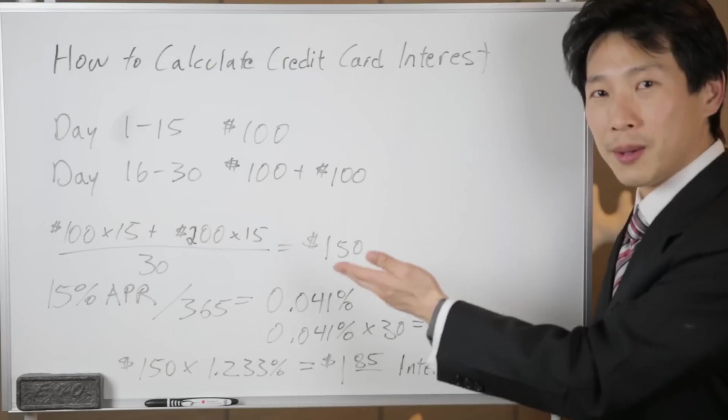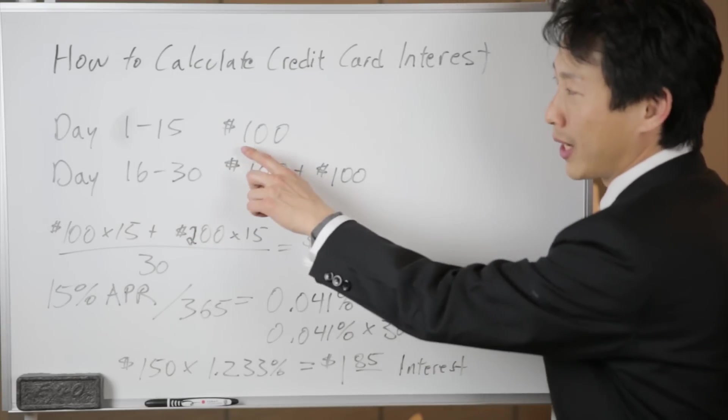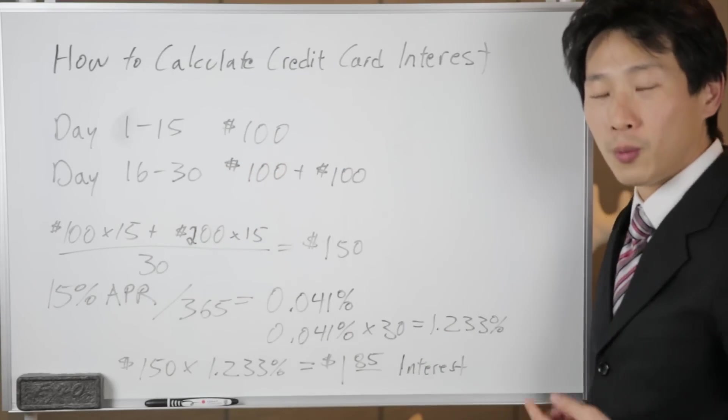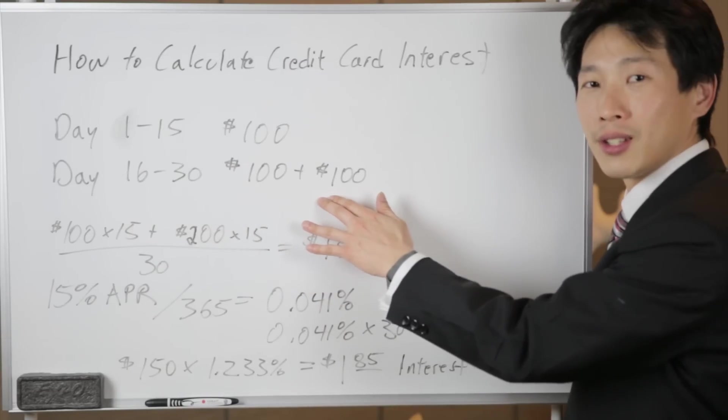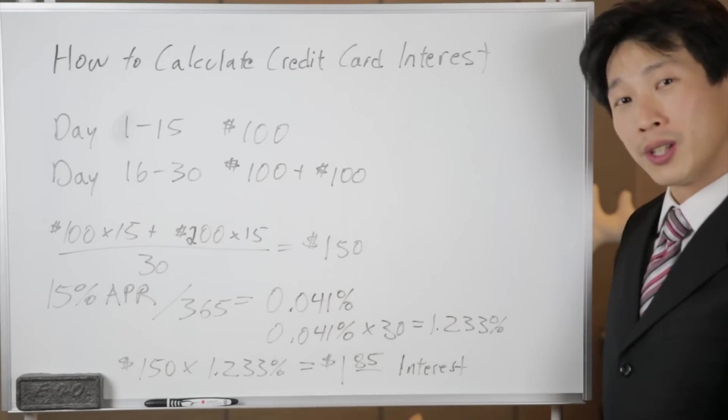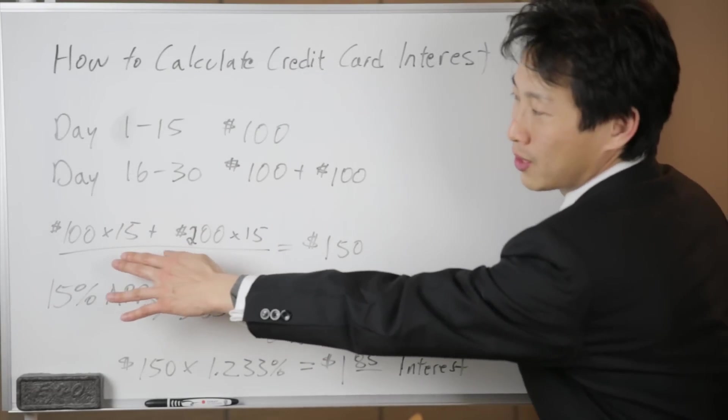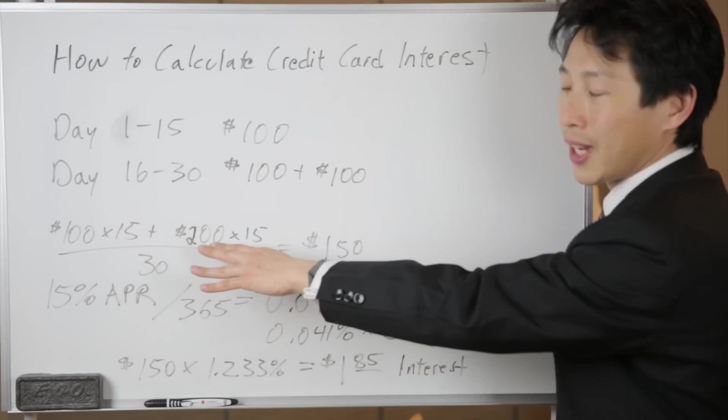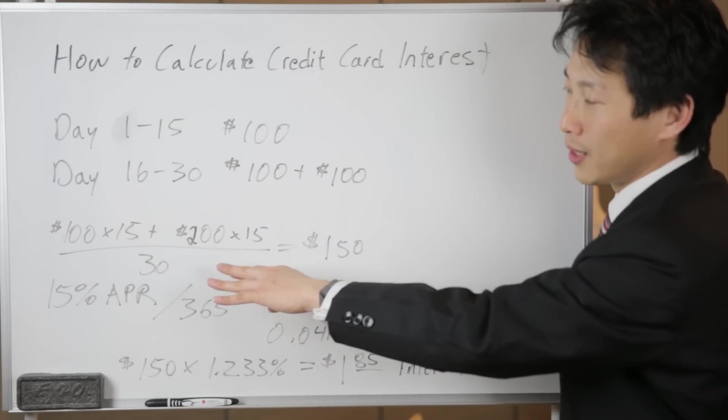But we're gonna do the simple math here instead where we go, okay, 15 days of it will have $100 in it and the rest of the 15 days of a 30-day month it's gonna have $200 in it. So we just do the simple math: $100 times 15, and then another $200 times 15.